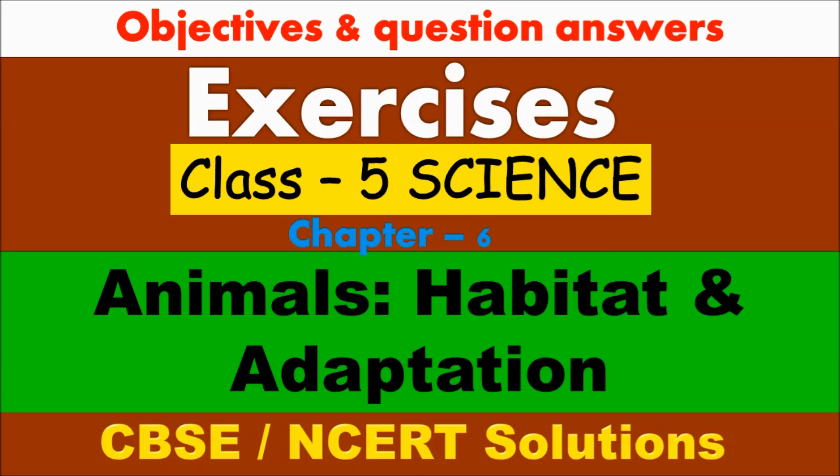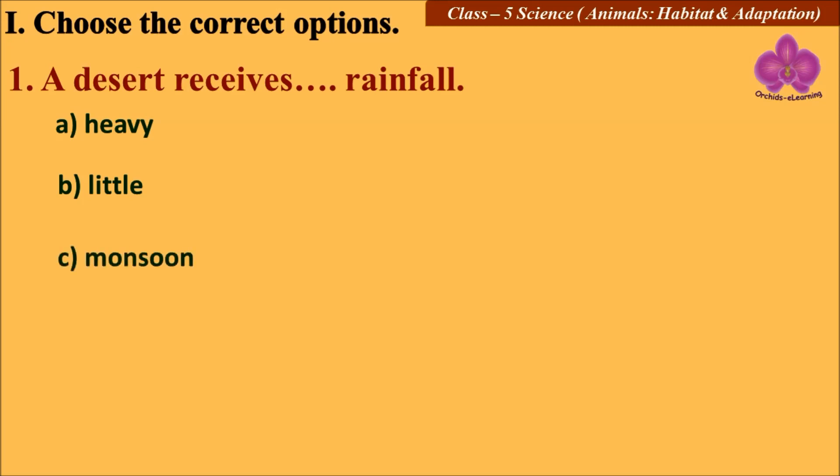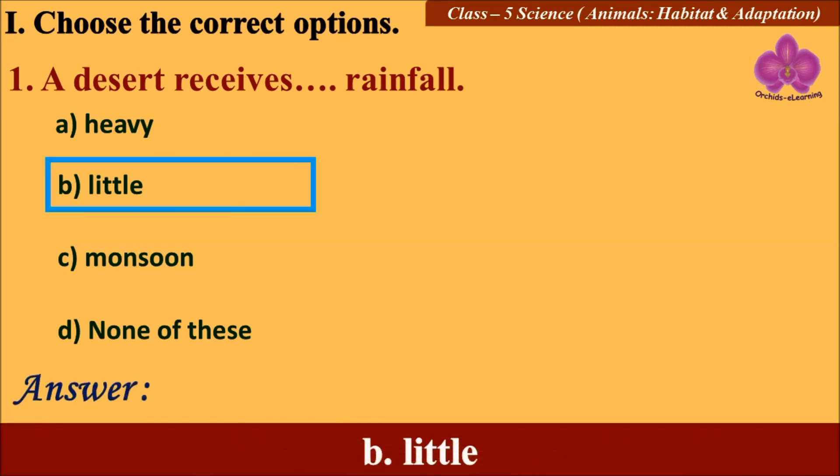the lesson Animals: Habitat and Adaptation. Question number one: Choose the correct options. A desert receives ____ rainfall. Options are: A) Heavy, B) Little, C) Monsoon, and D) None of this. Answer: B) Little.